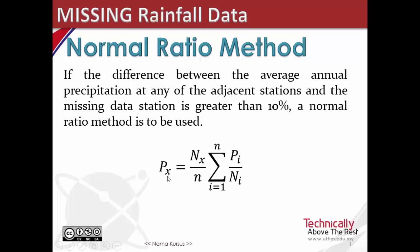Px is the estimated precipitation volume at the missing data site. Nx is the average annual precipitation at the missing data site. N is the number of adjacent stations.